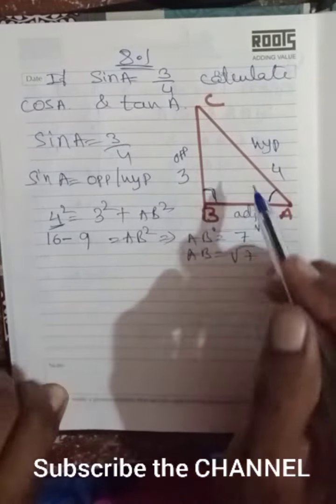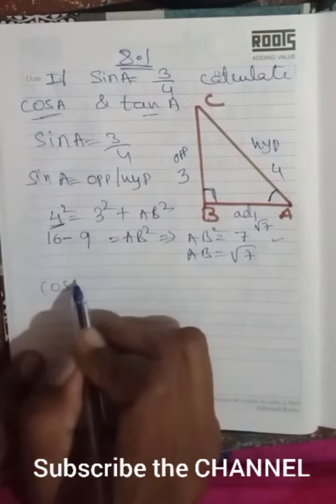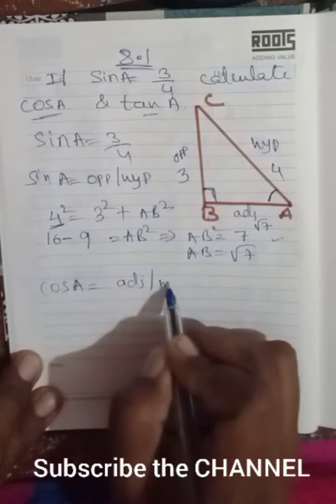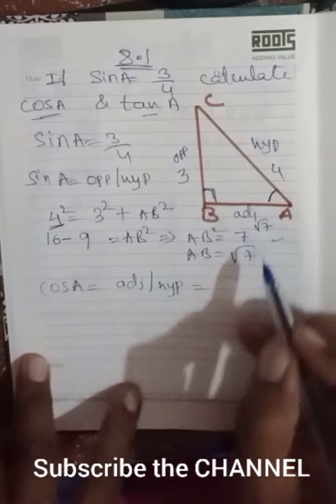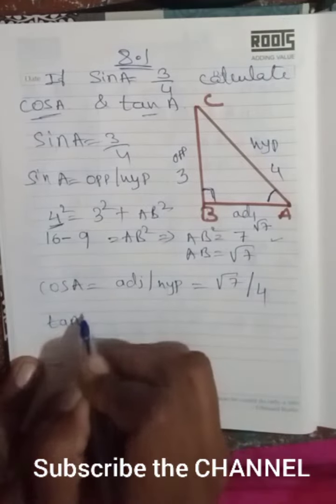Then cos A equals, as you know, adjacent over hypotenuse. The adjacent is root 7 and the hypotenuse is 4.